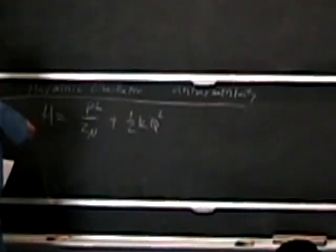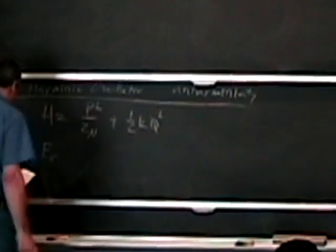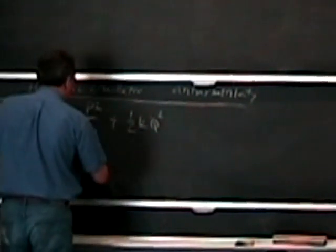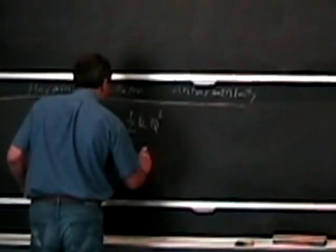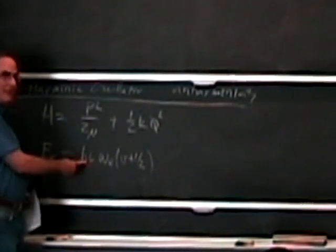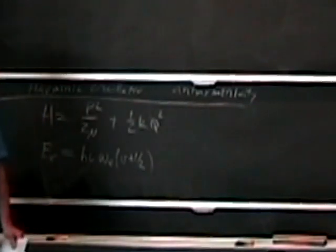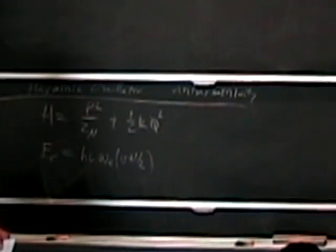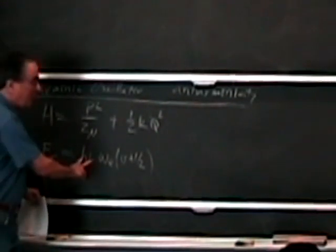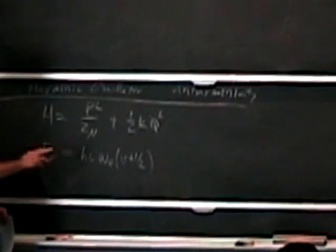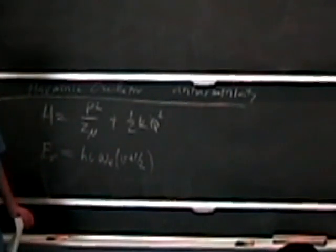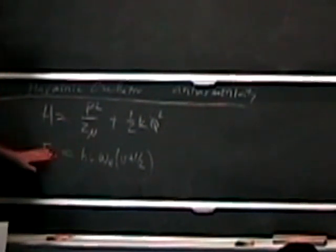We know that the energy levels for a harmonic oscillator are going to have the form hcω_e(v + ½). In spectroscopy, we use the quantity reciprocal centimeters to mean energy, frequency — anything we want. This factor of hc comes and goes at will. I'm going to include it for a while, but eventually I'm going to resort to the spectroscopic convention of calling ω_e an energy.